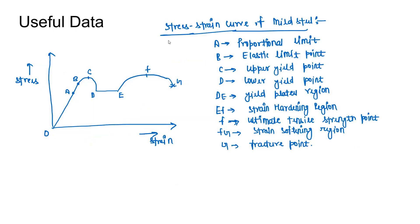Now coming to the useful data. Here we have drawn the stress-strain curve of mild steel. In the y-direction we have stress and in the x-direction we have strain. After increasing the stress, the strain variation in mild steel is linear. Point A here is termed as the proportional limit.